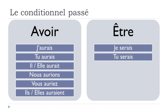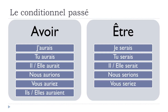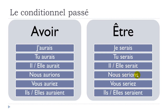For être at the conditionnel présent: Je serais, Tu serais, Il serait, Elle serait, Nous serions, Vous seriez, Ils seraient, Elles seraient. Final S not pronounced for je serais and tu serais; final T not pronounced for serait; final S not pronounced for nous serions; vous seriez — EZ sounds like 'é.' Phonetically: serais, serais, serait, serions, seriez, seraient. The AIENT ending sounds like 'ais' — so phonetically the same sound.